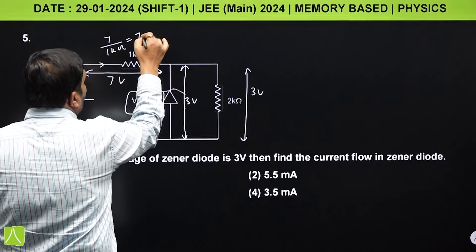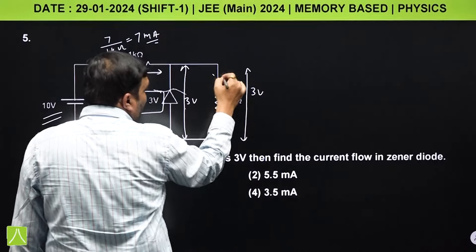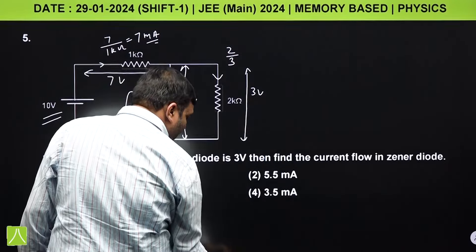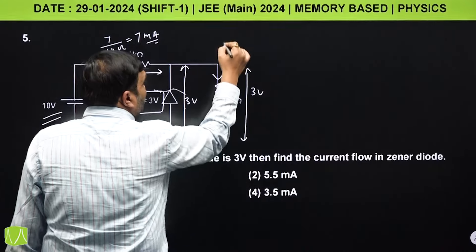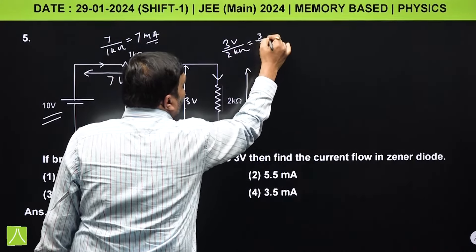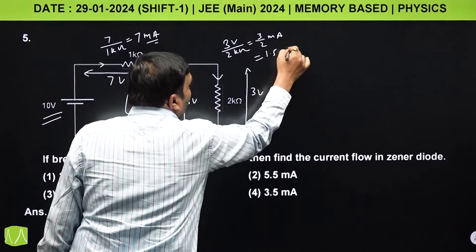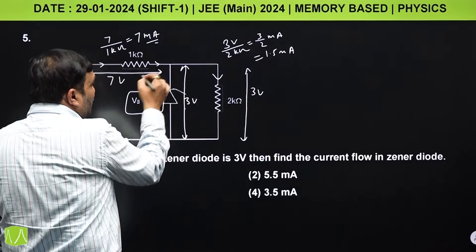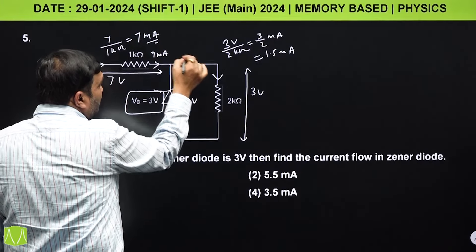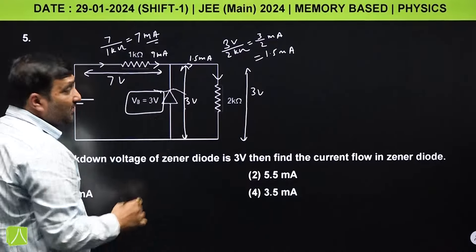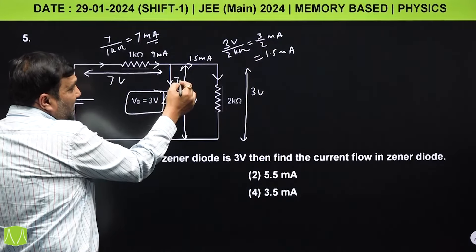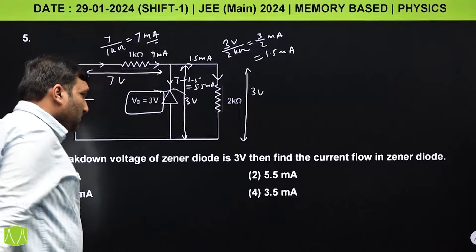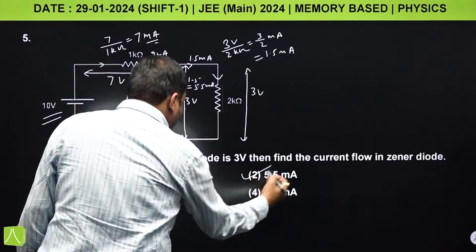Current through the 1 kΩ resistor = 7V / 1kΩ = 7 mA. Current through the 2 kΩ resistor (parallel branch) = 3V / 2kΩ = 1.5 mA. The Zener diode current = 7 mA − 1.5 mA = 5.5 mA. So 5.5 mA is the correct answer.